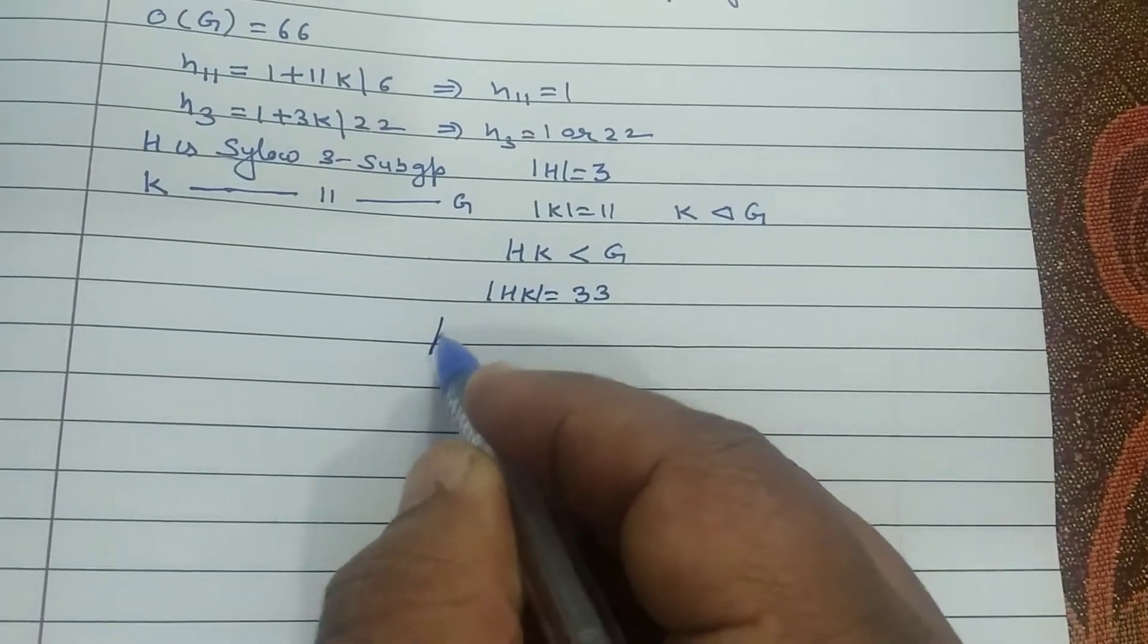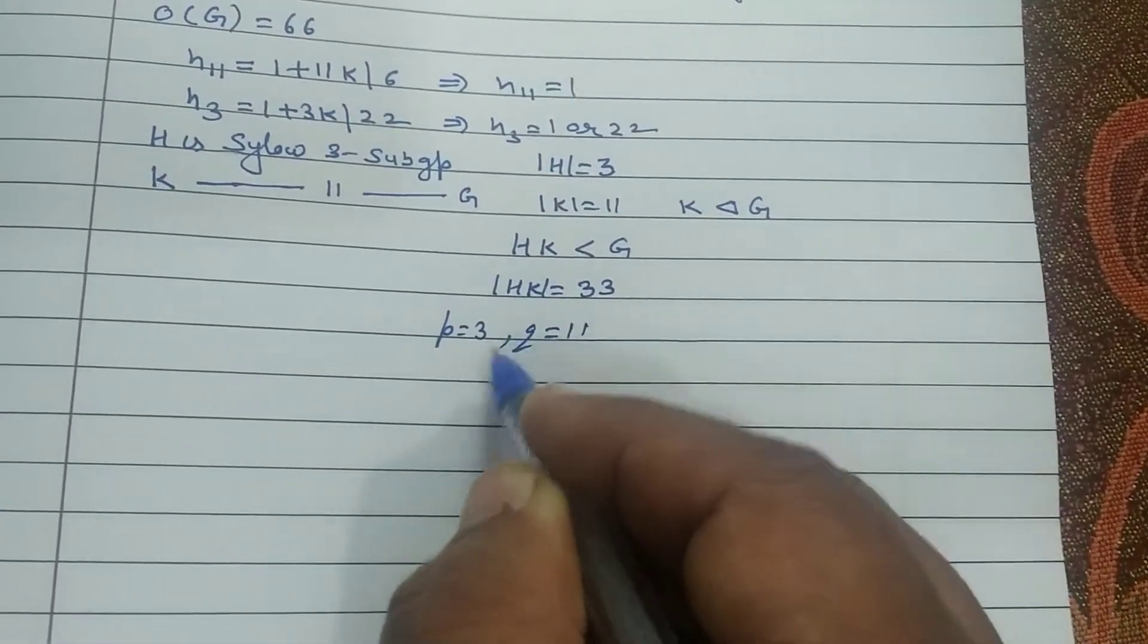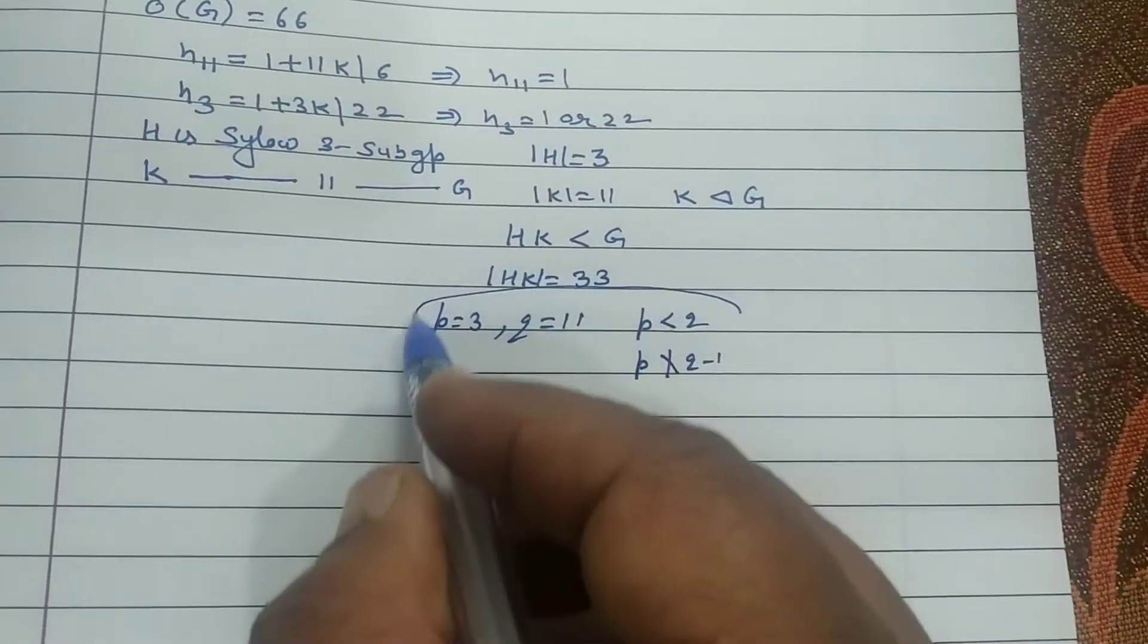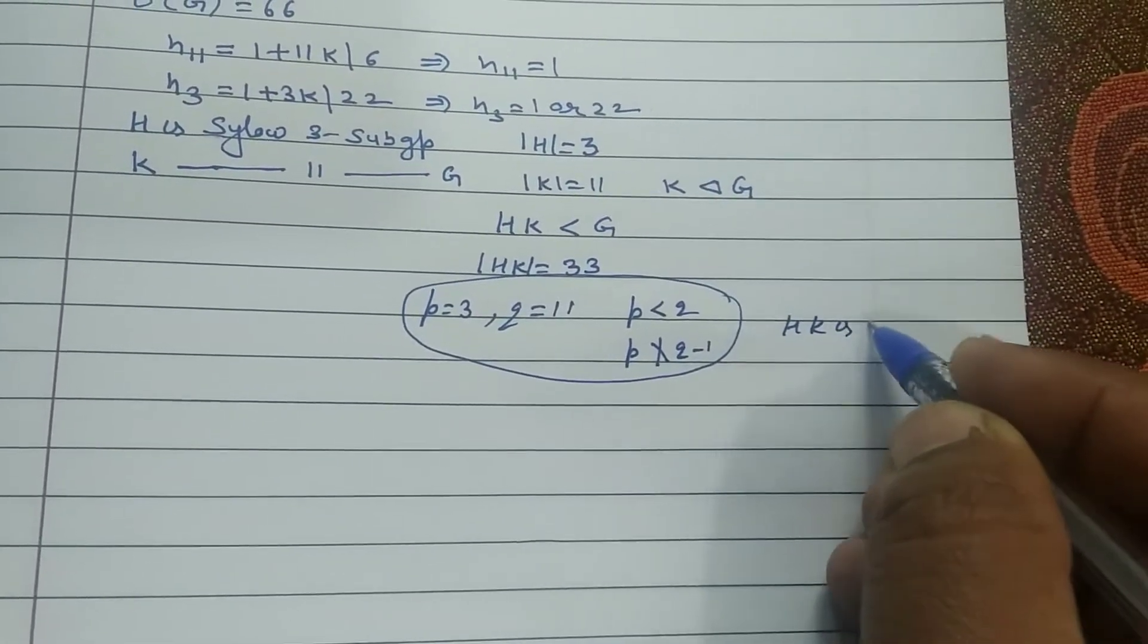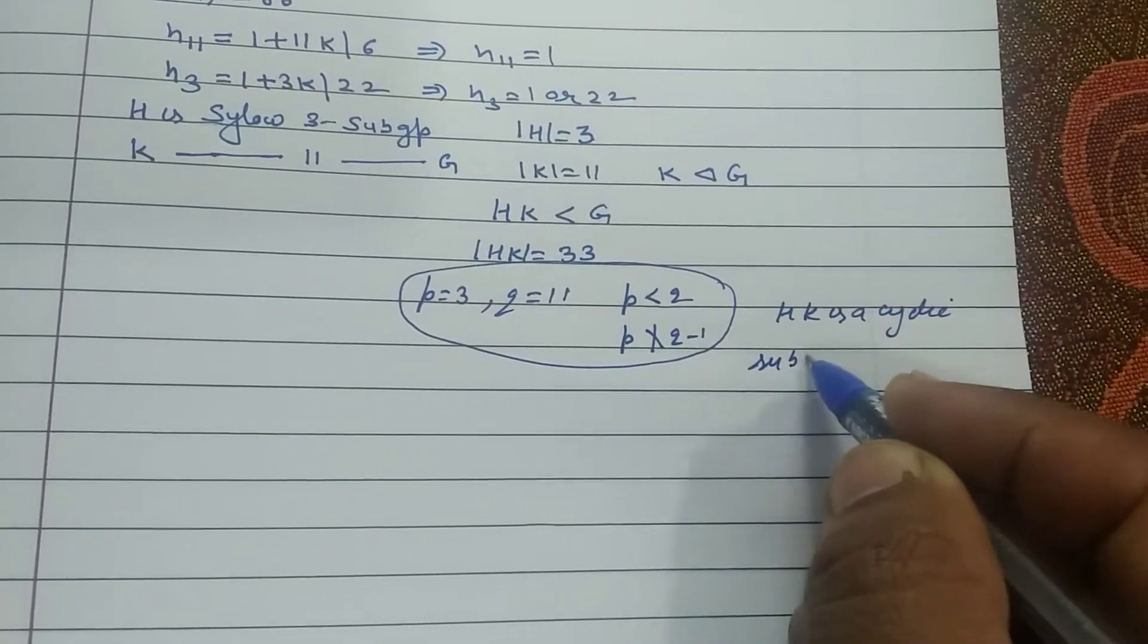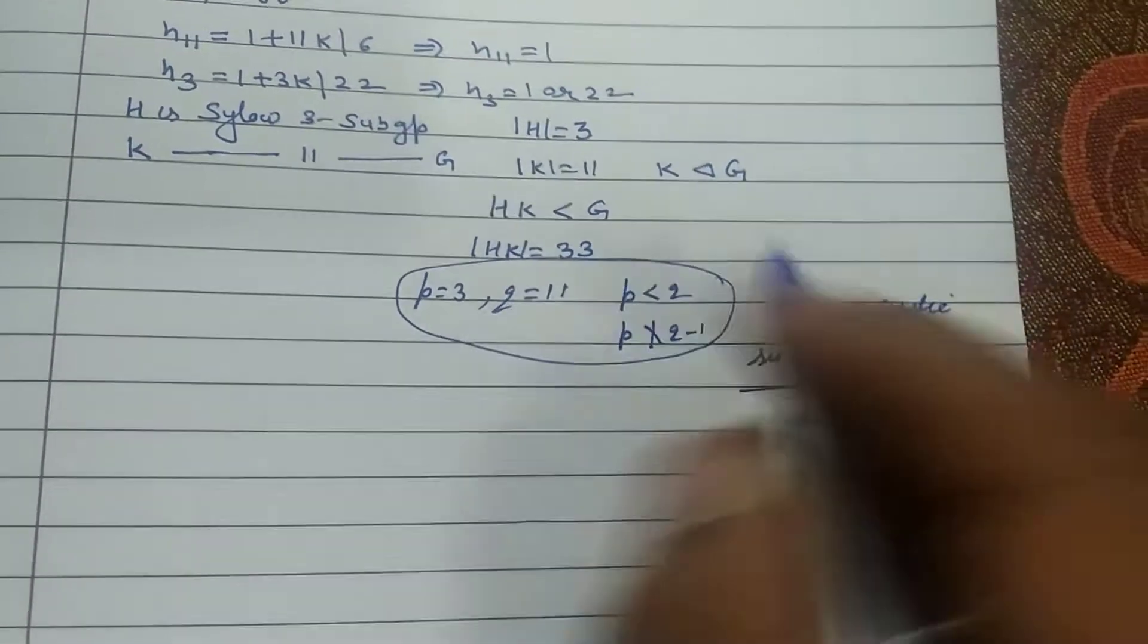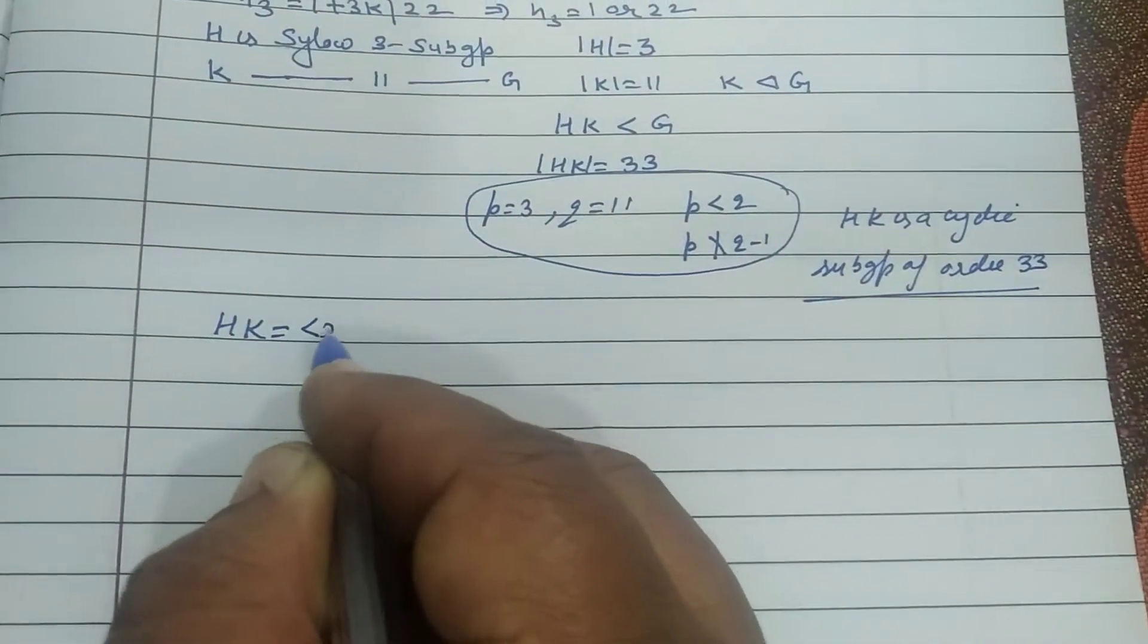If we take assume p is equal to 3, q is equal to 11, p is less than q, p does not divide q minus 1. All these things combine say that HK is a cyclic subgroup of order 33. So I am saying it is generated by x.